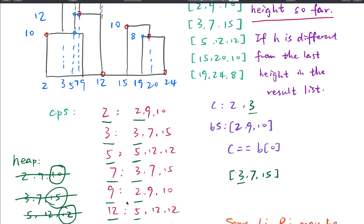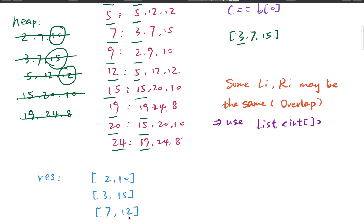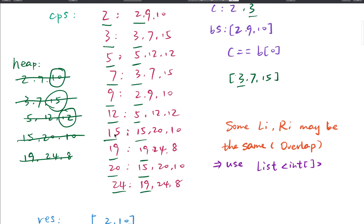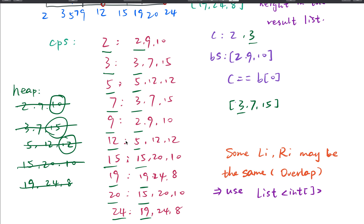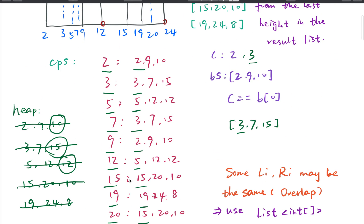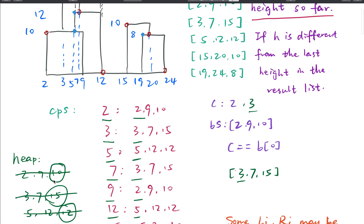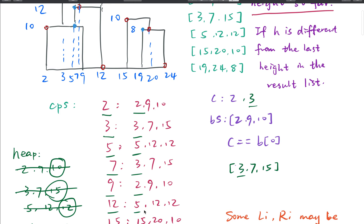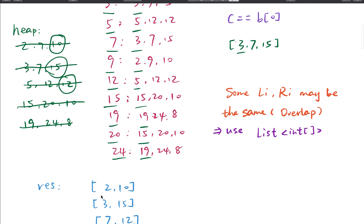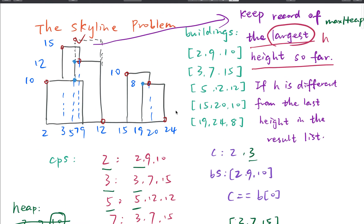We process index 9: it's a right index, so we remove building [2,9,10] from the heap. Only building [5,12,12] is left with height 12, which equals the last height in the result, so we keep going. Then we process index 12: it's also a right index, so we remove [5,12,12] from the heap. The heap is now empty, meaning we've finished processing all buildings — we add the rightmost endpoint [12, 0] to the result list.